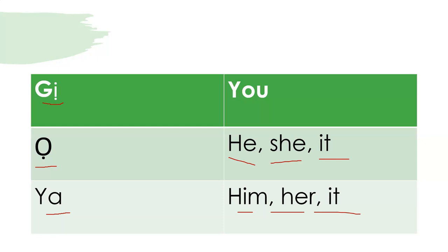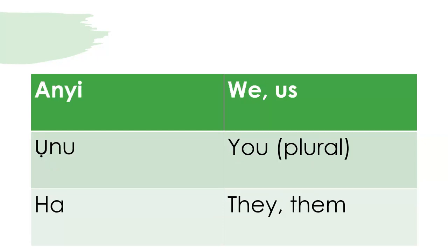And now we have for 'we' and 'us' — third person plural. We and us. And here we have also for 'you' — third person plural — all of you. And the last one we have is 'they' and 'them,' and we say it in Evo.